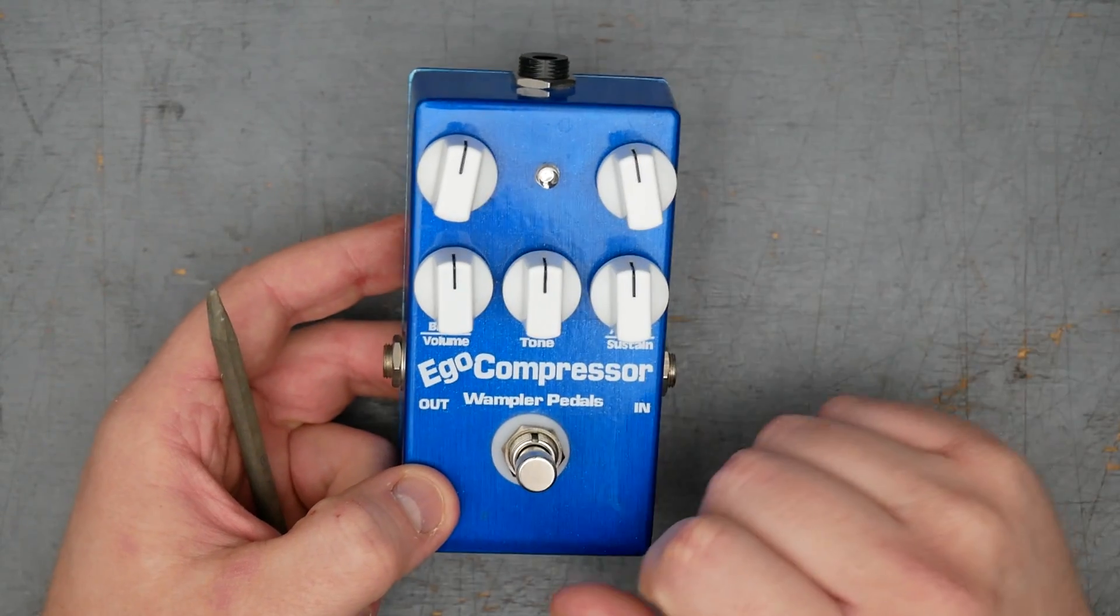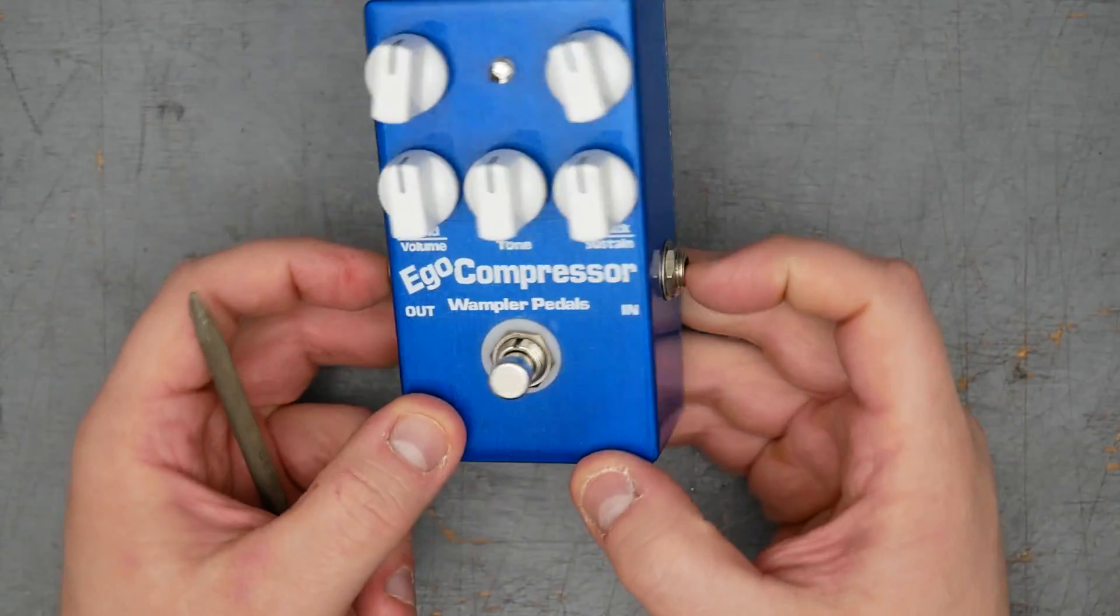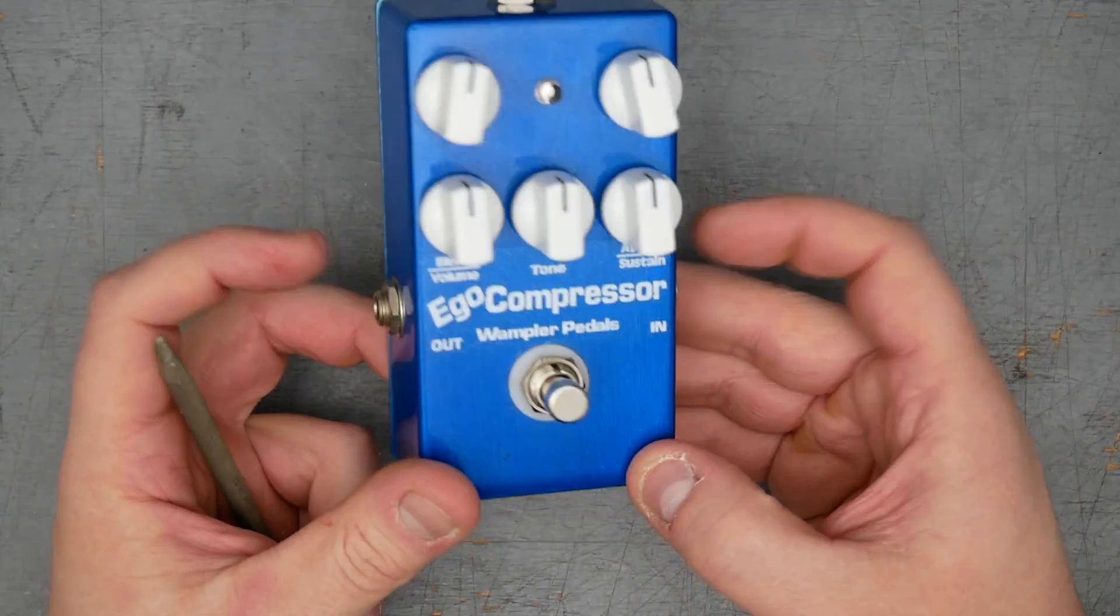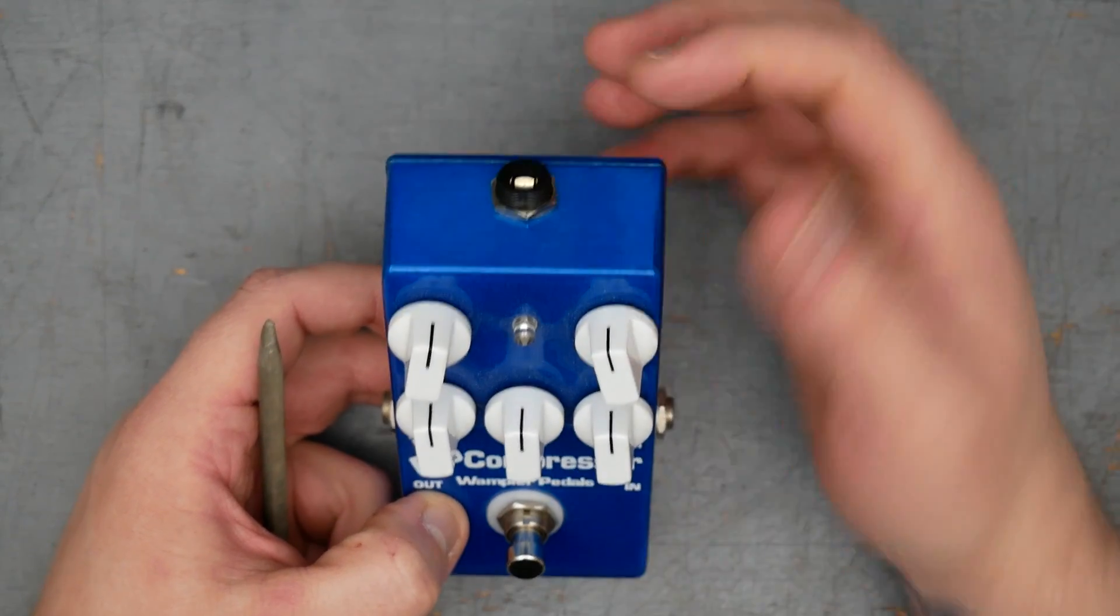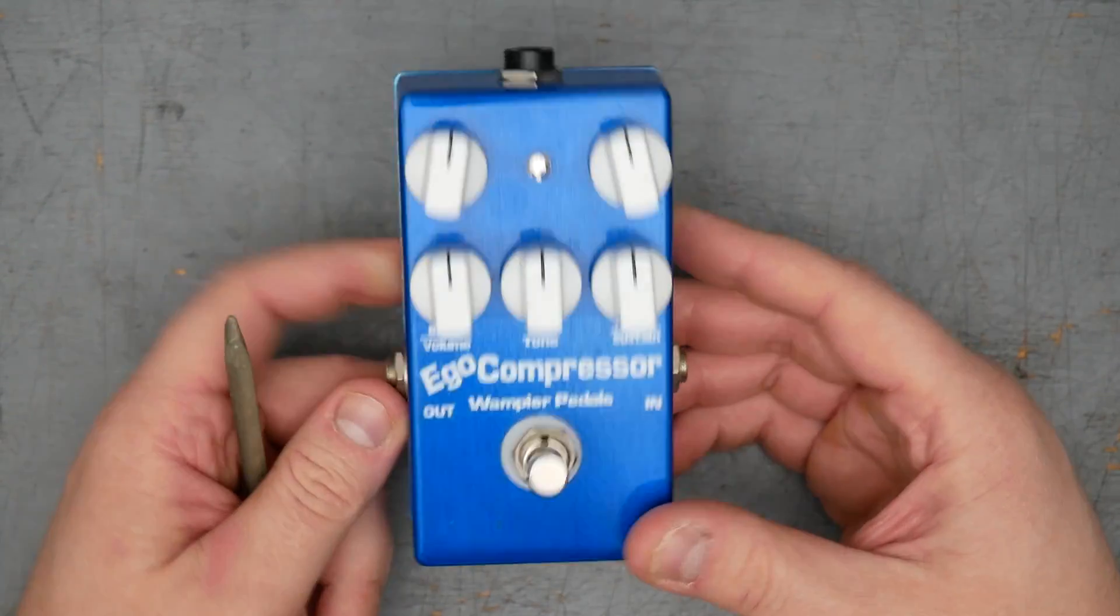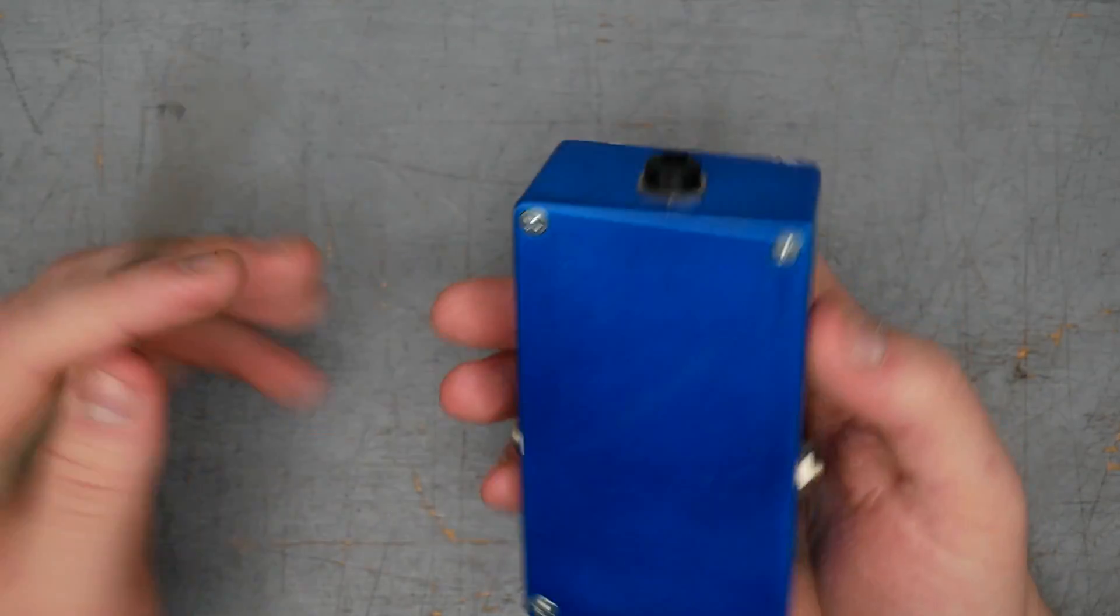We've got an LED right there in the middle, 5mm LED, standard latching foot switch. Input and output jacks are side mounted, which is kind of a sin on a 125B. We've definitely moved over to standardizing around top mounted jacks for 125B, but this was 2013 years ago. That's forgivable, I would say.